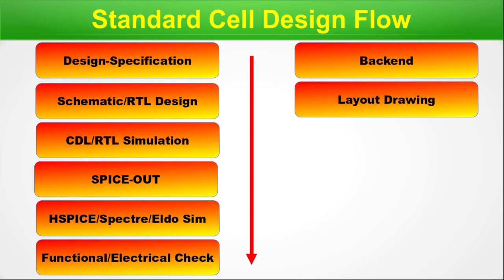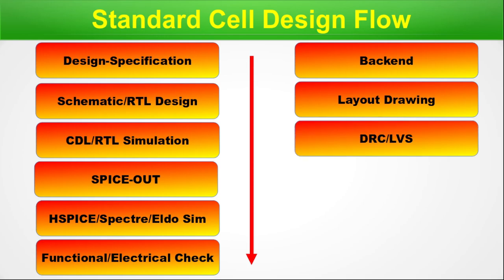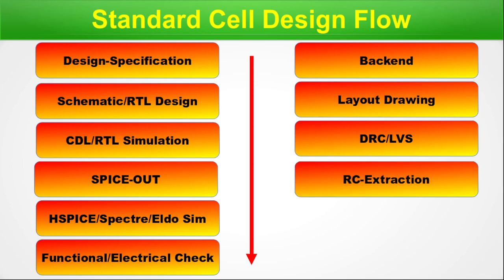In the backend, we do the layout drawing by hand using a popular tool known as Virtuoso — other tools exist but it is the most used one. This layout closely corresponds to the schematic or RTL drawn in the front-end. Next we do DRC and LVS on the layout. Then we do RC extraction — at the cell level, a DSPF netlist is extracted, and the DSPF is SPICE-compatible, so things can be back-annotated to a SPICE net during functional or electrical checks.